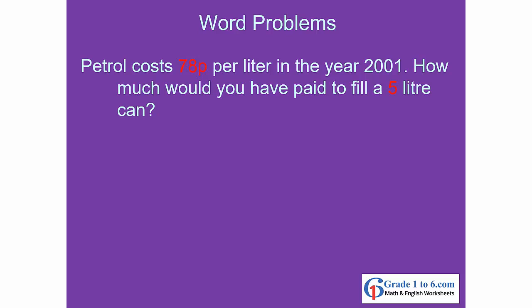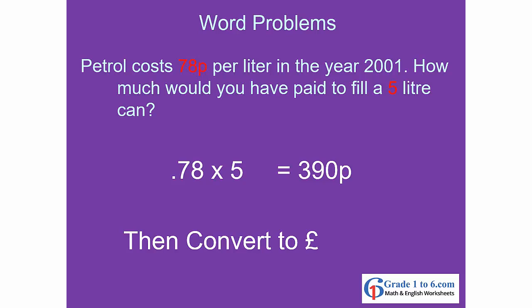Petrol costs 78p per liter in the year 2001. How much would you have to pay to fill a 5-liter can? 78 times 5 gives you 390p. Convert to pounds: that gives you £3.90.